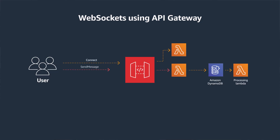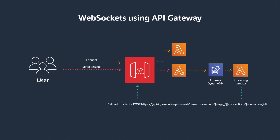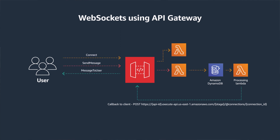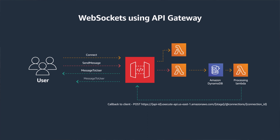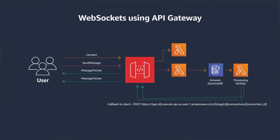Using the connection ID, which we persisted into DynamoDB earlier, the Lambda function can create a callback URL, which it uses to push a message to the client asynchronously. Additionally, the Lambda function can push multiple messages to the user if required using the same callback URL. Note that a single WebSocket API connection can last for up to two hours, so you don't have to worry about timeouts. Within this time period, both parties can exchange any number of messages.